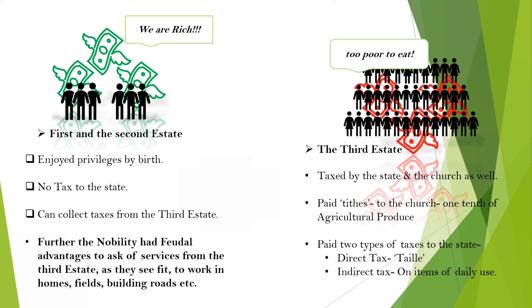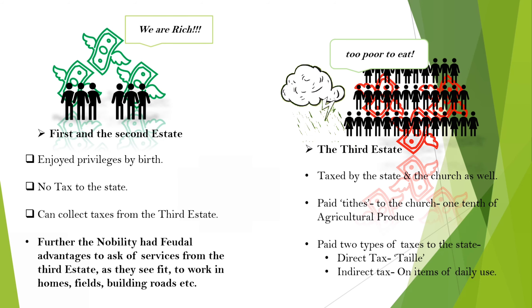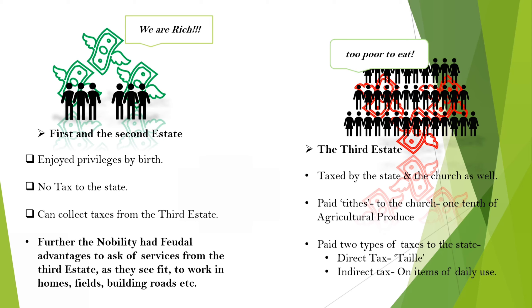Nobles enjoyed further feudal privileges which allowed them to extract taxes from the peasants — that is, the third estate. Peasants also had to extend their services to these lords however they required, be it working in their homes or fields, serving in the army, or participating in building roads. The church also drew taxes from peasants, called tithes, which was one-tenth of their total agricultural produce.